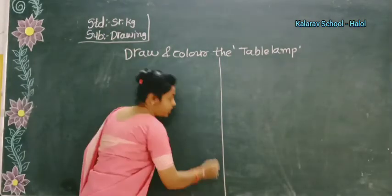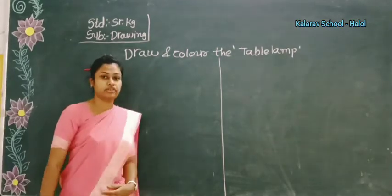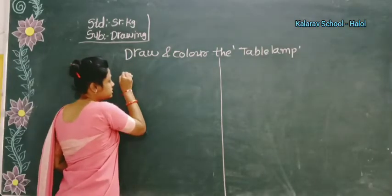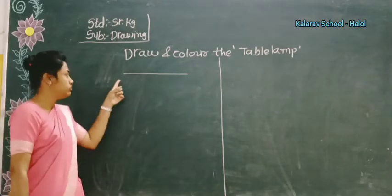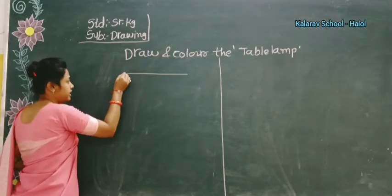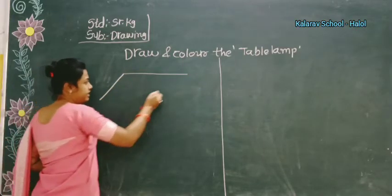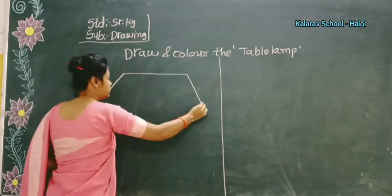Okay, so how to draw the table lamp? See here children, carefully look at the board. First, draw a sleeping line. Then draw the left side slant line and then the right side slant line.